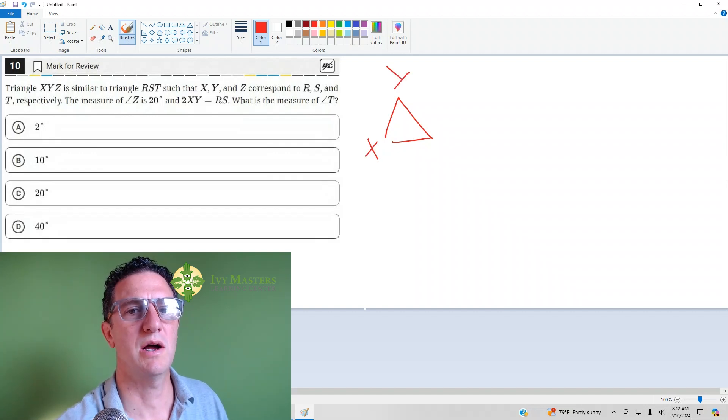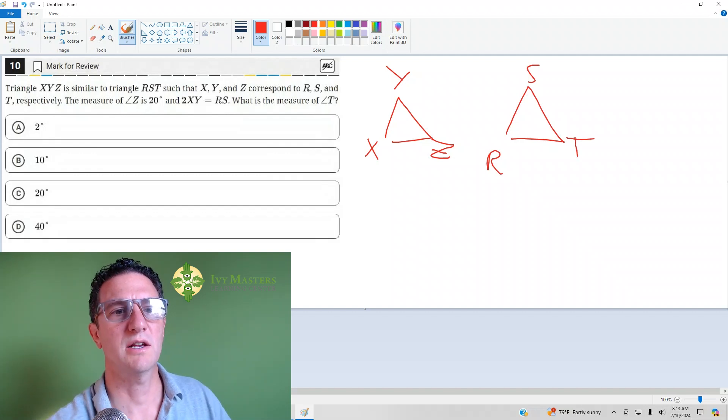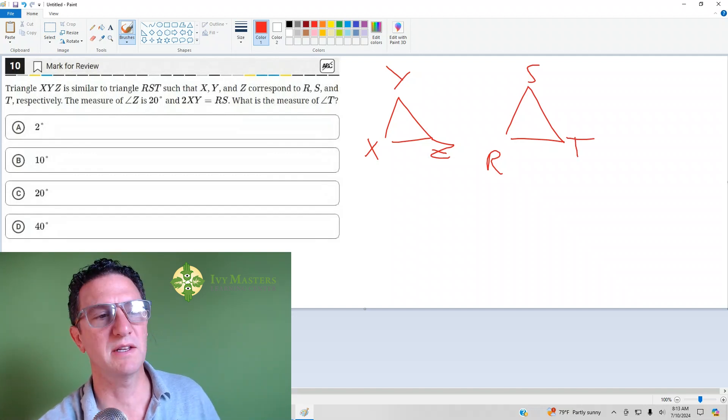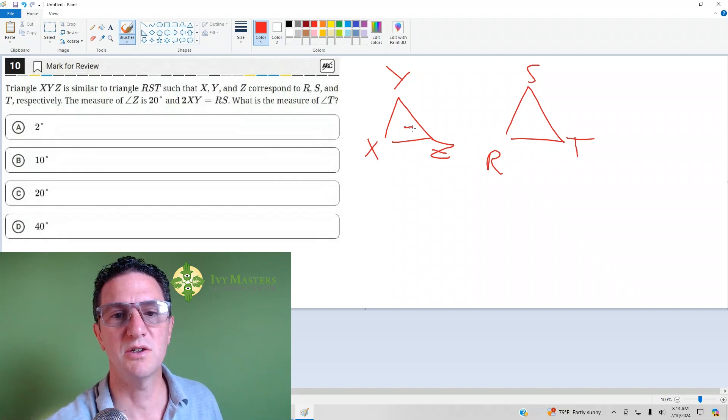Triangle XYZ is similar to triangle RST. XY and Z correspond to RS and T respectively. Measure of angle Z is 20 degrees.